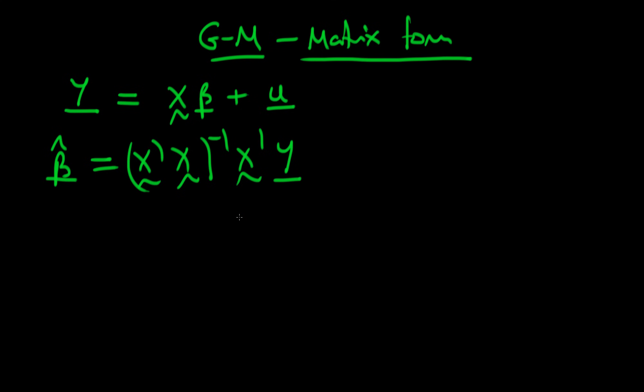The idea with the Gauss-Markov Theorem proof is that the first stage is that we form some other estimator, let's say beta tilde, and we have to prove that beta tilde is unbiased under certain conditions.